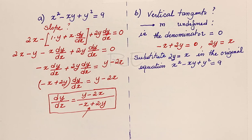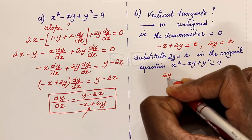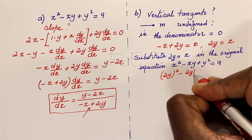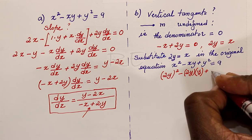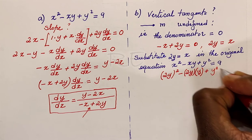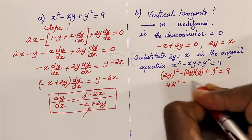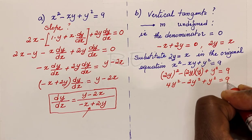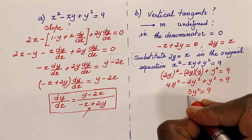When we substitute 2y for x in the original equation, we will get an expression in one variable. Wherever we see x, we replace it by 2y. So we get: 2y squared minus 2y times y plus y squared is equal to 9, which gives 4y squared minus 2y squared plus y squared is equal to 9. 4y squared minus 2y squared is 2y squared, plus 1y squared gives 3y squared.